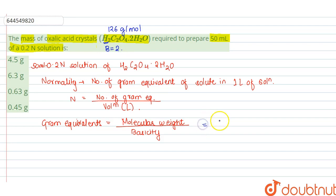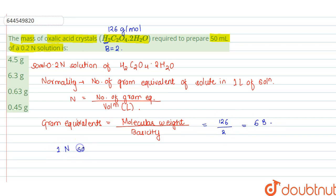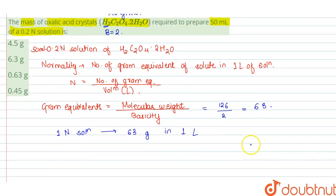Therefore, gram equivalence is equal to 126 upon 2, which is equal to 63. It is clear that a 1 normal solution of oxalic acid crystals contains 63 grams in one liter of solution.